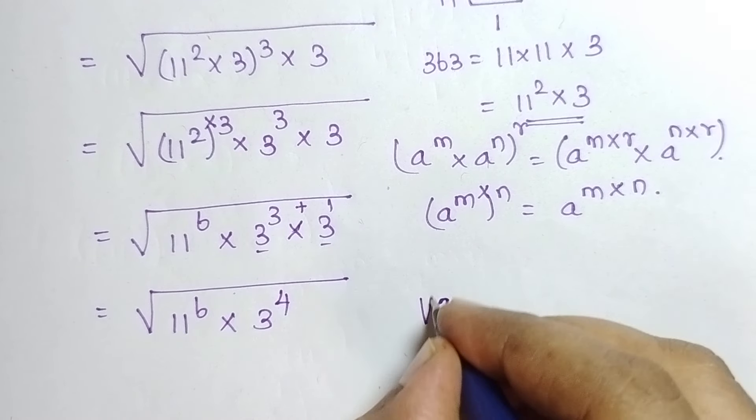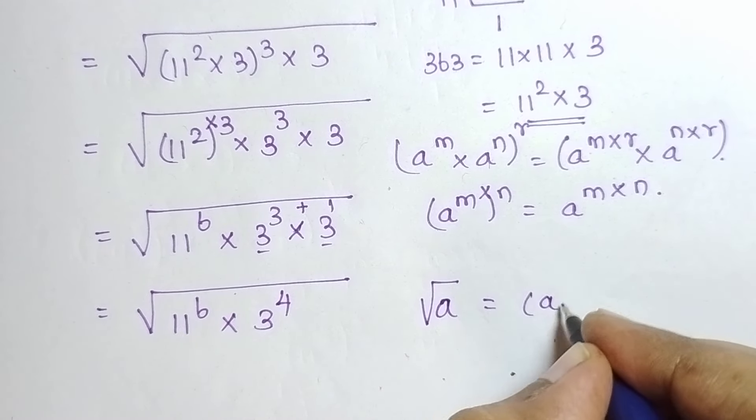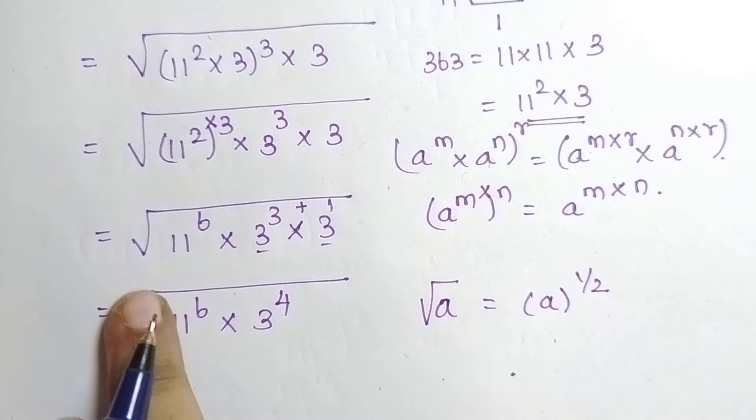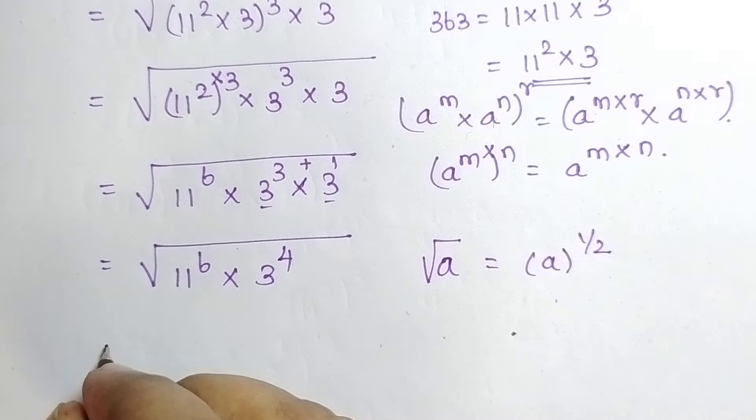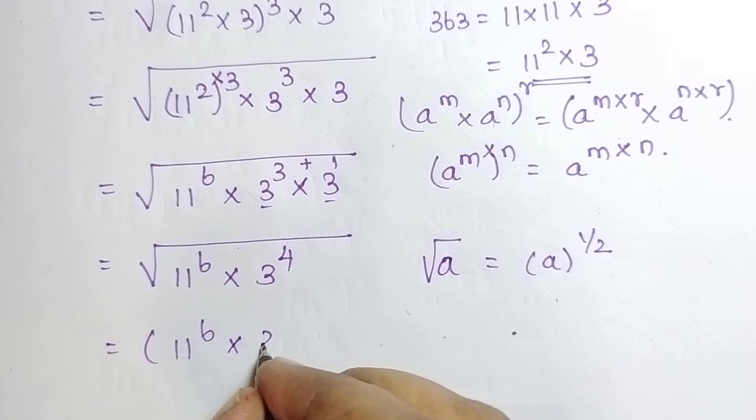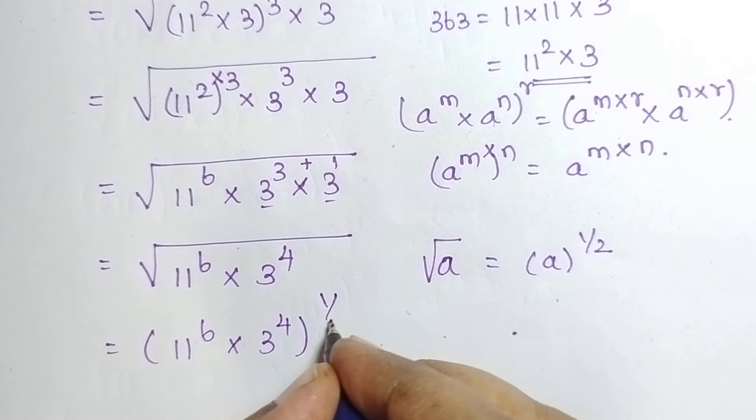We know that, root A can be written as A power 1 by 2. The both are equal. Just replace the root by 1 by 2. So, this is equal to 11 power 6 into 3 power 4 whole power 1 by 2.